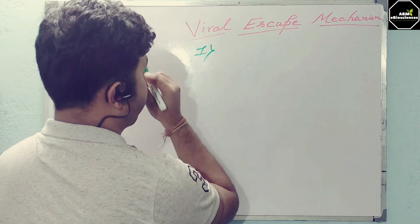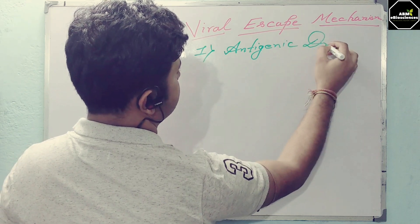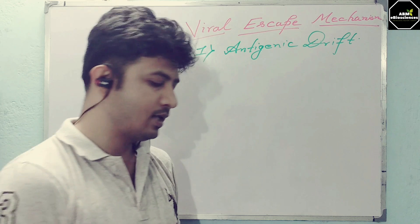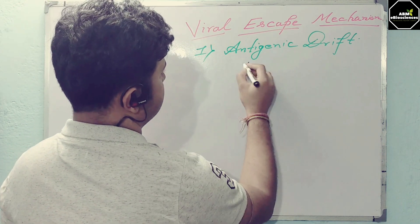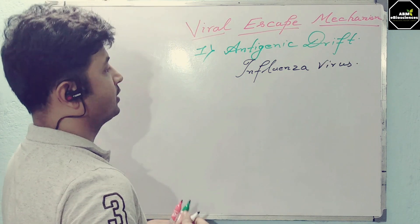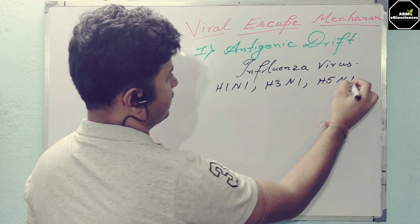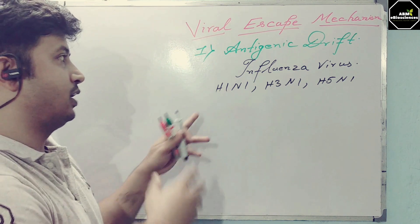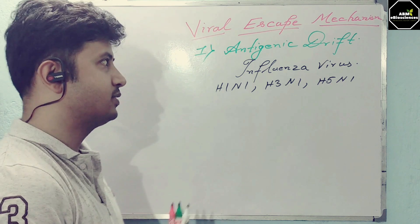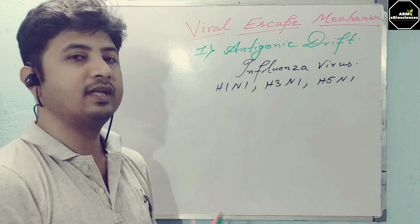The first mechanism is antigenic drift. Antigenic drift is a very dangerous mechanism of a virus and can be seen in the influenza virus. You may have heard of several strains like H1N1, H3N1, and H5N1. These are several strains of the influenza virus where H equals hemagglutinin and N is neuraminidase. There is a modification in these segments, which is why they have changed their protein structure so the virus can escape — antibodies prepared previously will not be reactive to the next strain.